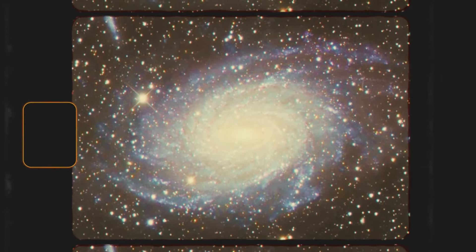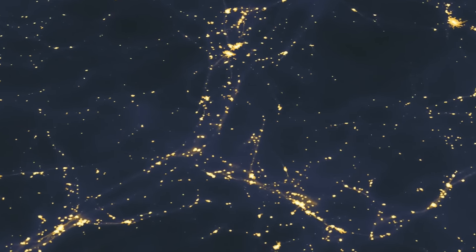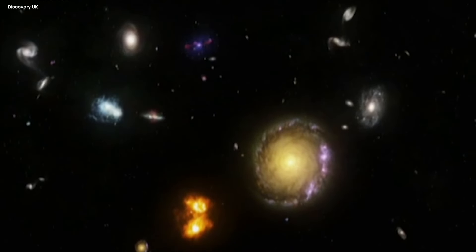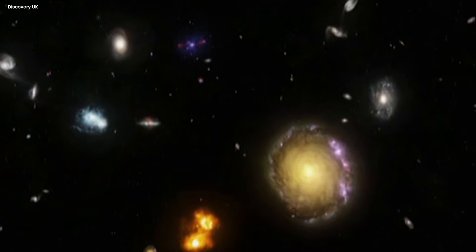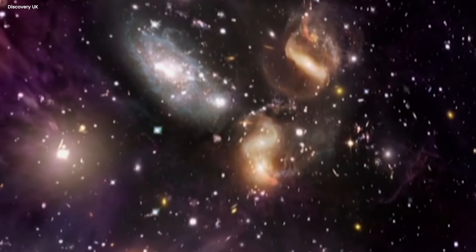Zwicky did something similar to what Oort did with the Milky Way, but on a much grander scale. He looked at all the galaxies in the Coma Cluster, estimated their mass, and then measured how fast they were zooming around. But there was something kind of crazy going on. When he compared the galaxies' motion energy to the gravity holding them together, there was a massive mismatch.